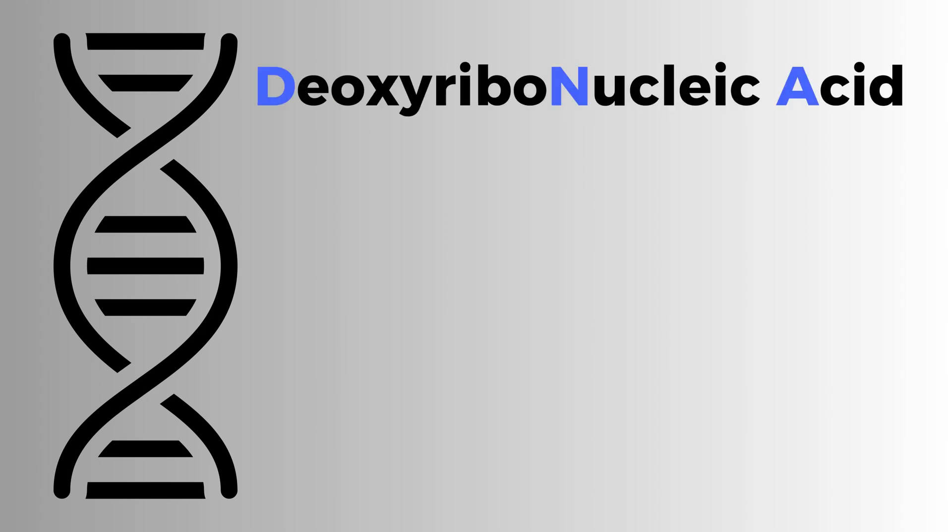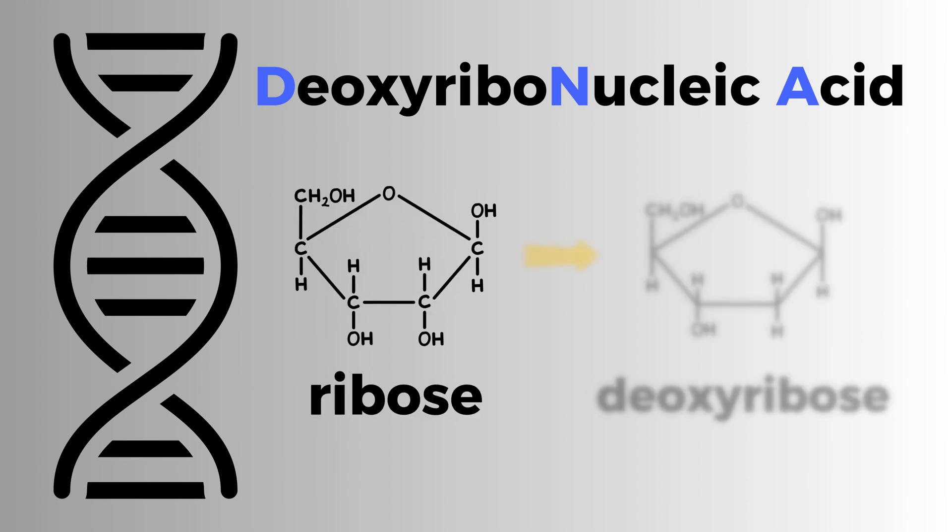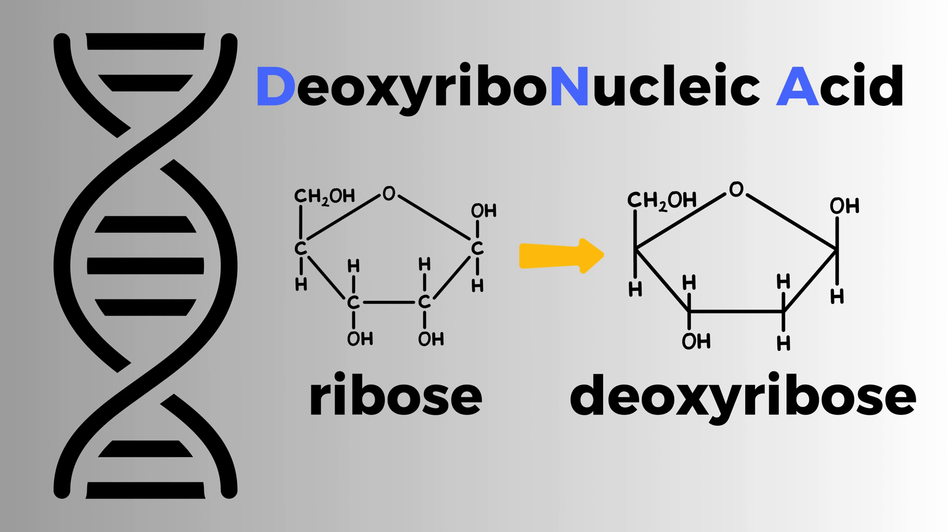So what do we know about DNA? Its name comes from deoxyribonucleic acid, which is directly related to its chemistry. Ribose is a 5-carbon sugar, deoxy means it is missing an oxygen atom, and acid refers to its acidic nature. That's where we get the abbreviation DNA.